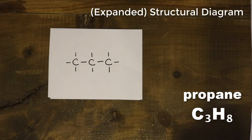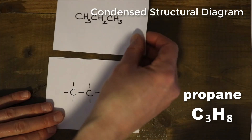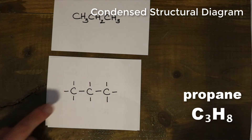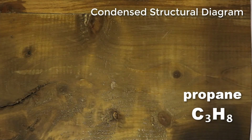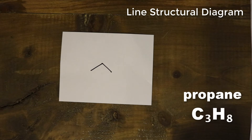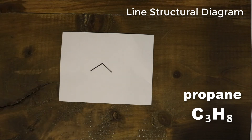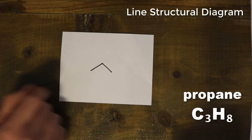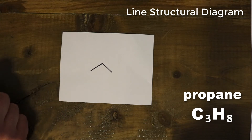We can have a condensed structural diagram, which takes the carbons and hydrogens and accommodates each one. You'll notice that the number of lines in the expanded structural diagram corresponds to the number of hydrogens you see in the condensed version. The simplest representation is the line structural diagram — each point and corner represents a carbon, and each carbon has a full complement of hydrogens. Terminal carbons have three hydrogens, and carbons in the middle have two. This helps us identify the number of carbons and hydrogens in the chemical formula for propane.